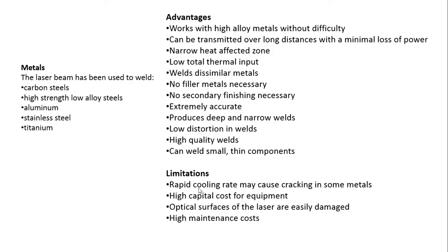Laser beam welding can handle a lot of materials including titanium, stainless steel, and others. For titanium, using shielding and a controlled atmosphere, we can make a good joint without contamination. Advantages include: automation is possible, high speed, filler metals are optional since the laser beam itself can melt and join. It produces high quality joints with less distortion because heat input is very small and confined to a small area. Dissimilar joints can also be welded.